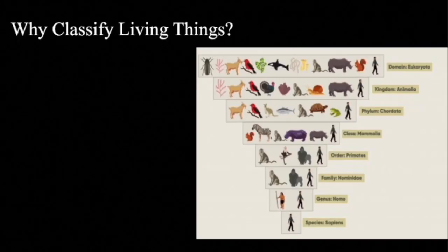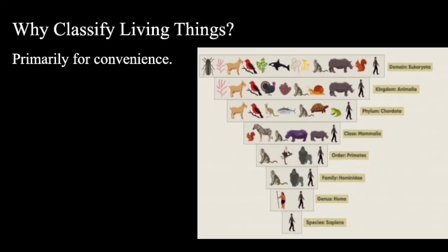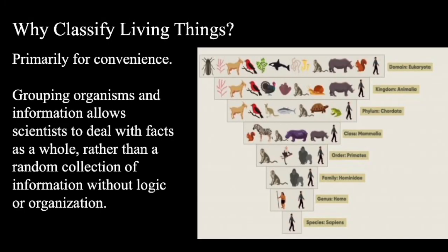Why classify things? Well, primarily for convenience. Grouping organisms and information allows scientists to deal with facts as a whole rather than a random collection of information without logic or organization.